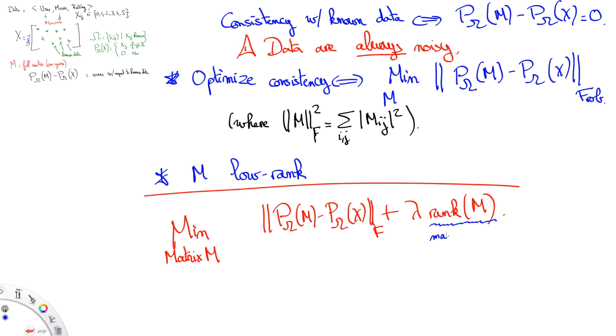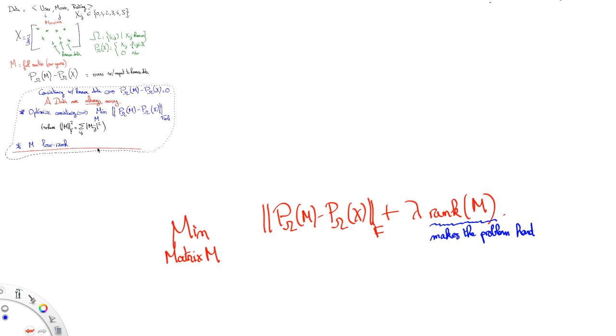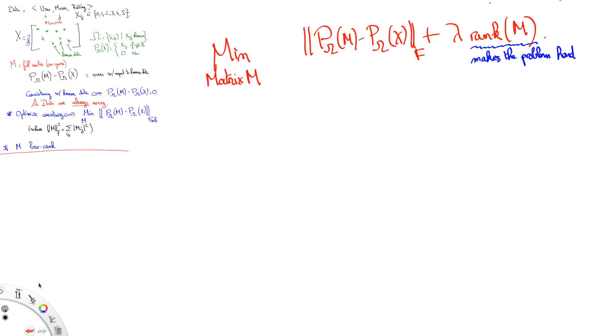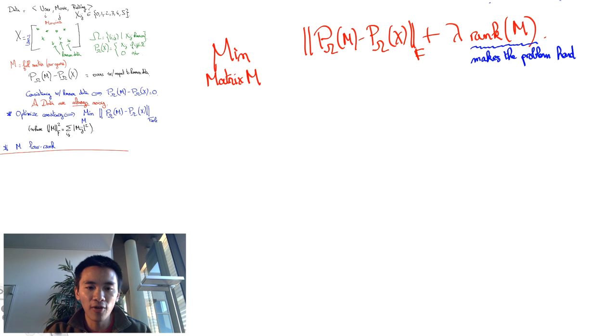The trouble is that this is a difficult problem, and this is because the rank of the matrix is a very discrete and combinatorial measure of the matrix. In fact, the problem here is provably difficult. It is an NP-hard problem.